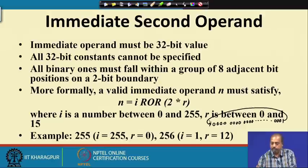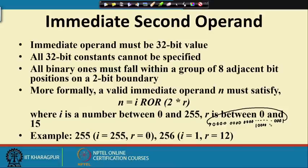After rotating, this 1 will come to position 8, giving us a 32-bit number where bit 8 is 1 and all other bits are 0. This is the number 256. So we can represent 256 in this particular format.